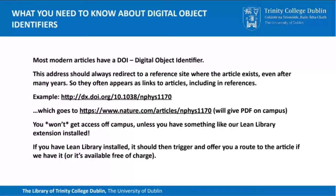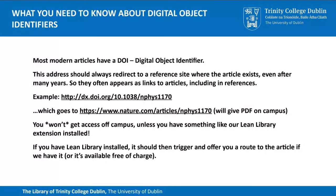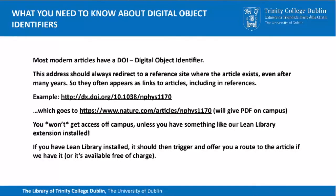You can also search for articles using digital object identifiers, or DOIs. This is a specific number attached to every single article published in academic journals over the last few years. If you copy and paste that DOI number into a Google or Google Scholar search, it will bring you to the journal article. And if you're using Lean Library, it will bring you to the full text as well. So the DOI number can be a very handy shortcut to finding a specific journal article.